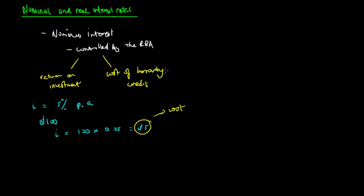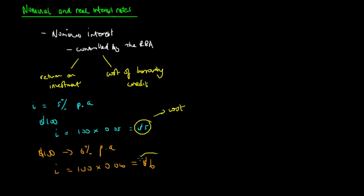Similarly, we have the return on investment. So if we were to invest $100 at 6% per annum, then the interest repaid would be 100 times 0.06, which equals $6. This represents the return on investment. After a year, you would gain 6% back on your investment and have $106 in your bank account. So that's the nominal interest rate — it is the return on investment or the cost of borrowing credit.